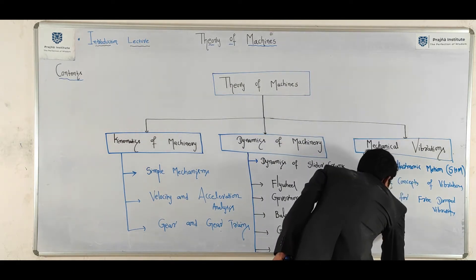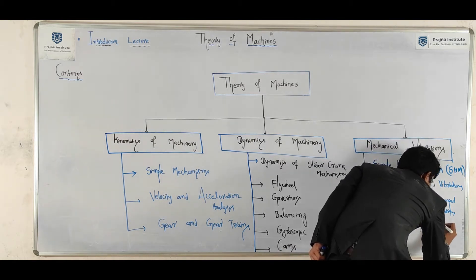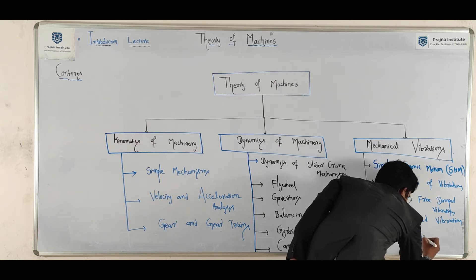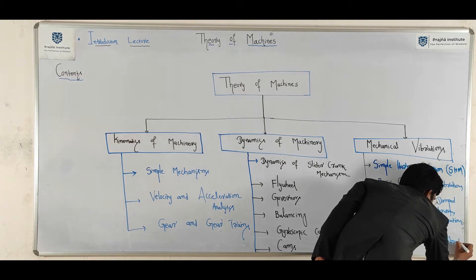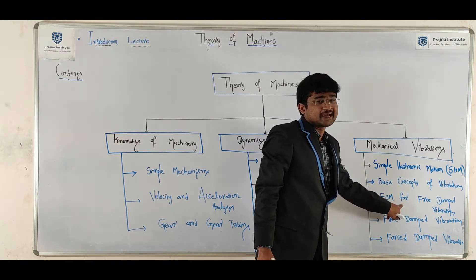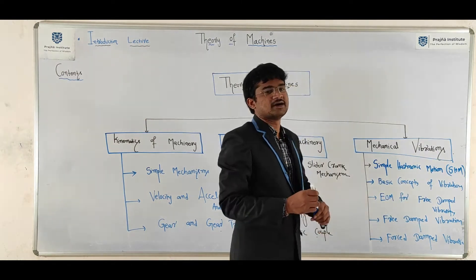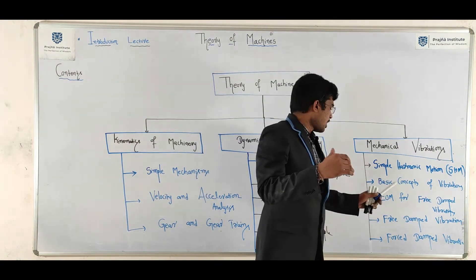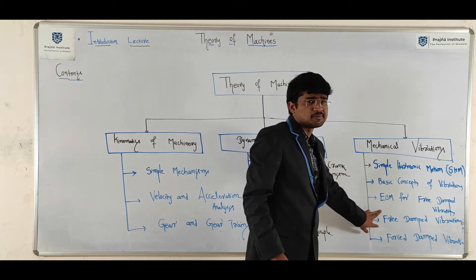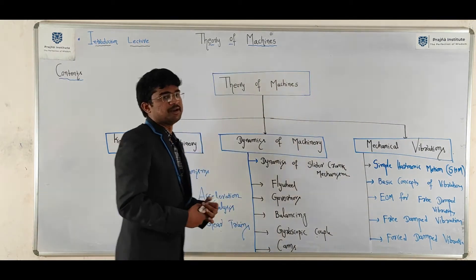Next, free damped vibrations, and then force damped vibrations. Your equation of motion is obtained by drawing the free body diagram for a spring-mass-damper system. It may be free vibrations or free damped vibrations. First, you will focus on obtaining the equation of motion for the spring-mass-damper system, then how to solve the equation of motion in case of free damped vibrations, and also the same for forced damped vibratory motion.